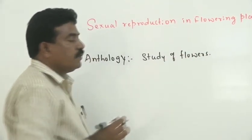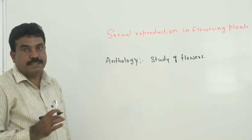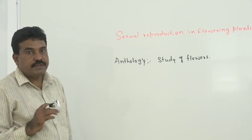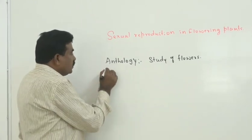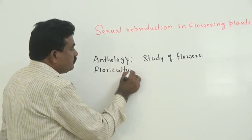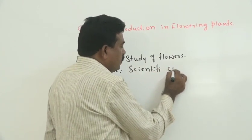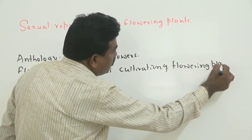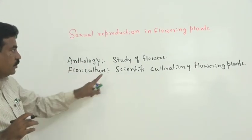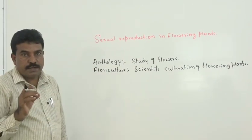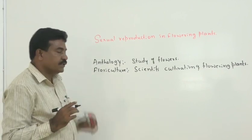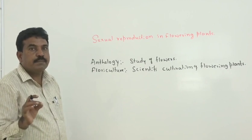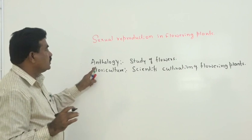In first year, in Morphology of Angiosperms, we explained flower study — calyx and its units, corolla and its units, androecium and its units, gynoecium and its units — all with respect to anthology. Floriculture means the scientific cultivation of flowering plants. It is an applied branch; for example, growing roses and marigolds commercially on one acre of land for the market is floriculture. The arrangement of sepals, petals, stamens, and carpels also comes under anthology.